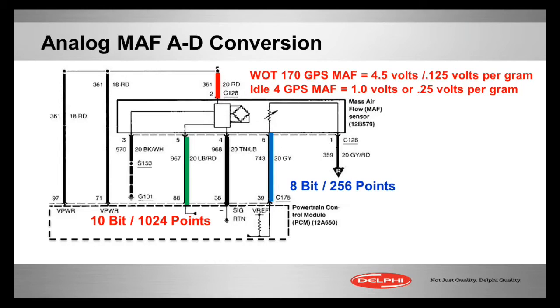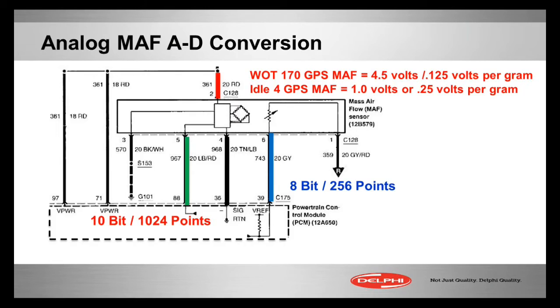The reason why is the high-speed conversion of voltage to grams per second. As we see about 4.5 volts at wide-open throttle — when we did that little blip and watched our meter measuring the mass airflow output — we can equate that to about 125 millivolts per gram. So another gram of air can make a difference in how it runs. At idle, not as much accuracy is needed: 250 millivolts per gram of air. So it's more important to have accuracy at high speeds.